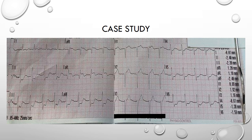We know that ischemia doesn't localize, so it could be reciprocal to ST elevation elsewhere. But if we check for at least two contiguous leads with ST elevation so that we can call a STEMI, we don't really find that here. The anterior leads have some elevation in them but we don't quite meet the criteria for calling a STEMI yet. We also have ST elevation in AVL, but when we look at lead 1 it is showing ST depression according to the computer and is at best isoelectric, so we can't call this a high lateral STEMI either.